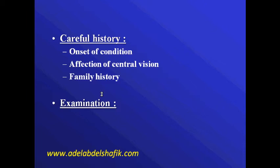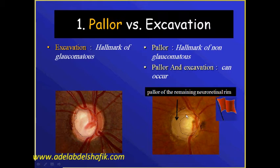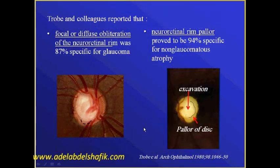So we need to do a careful examination — check for the onset of the condition and be aware of the affection of the central vision and the family history. On examination, the signs that will draw our attention that this cupping is not glaucoma: first, if you see pallor in the remaining neural rim, this is a case of non-glaucomatous, while in glaucoma the remaining neural rim is healthy. In one study, it was shown that focal or diffuse atrophy of the neural rim was specific in 87% of glaucoma, while pallor of the remaining neural rim was specific in 94% of non-glaucomatous atrophy.